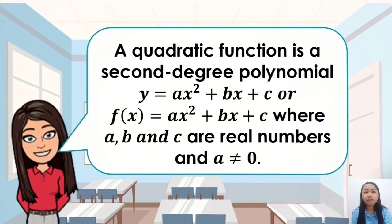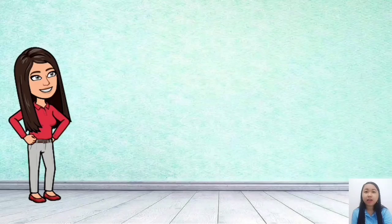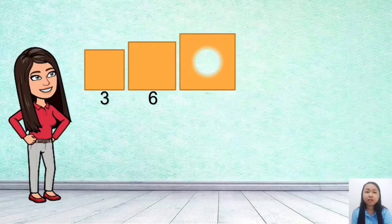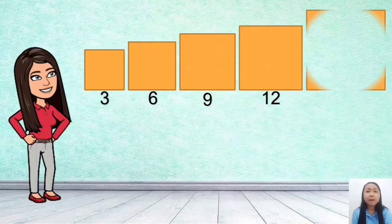Let's start discussing quadratic function using this simple problem. Mr. San Miguel is renovating his house. Before the lockdown, he managed to buy square tiles with 5 sizes. He wants to determine the area of each tile. This is the illustration of the tiles with 5 different sizes. The smallest tile has a side of 3, the next tile has a side of 6.